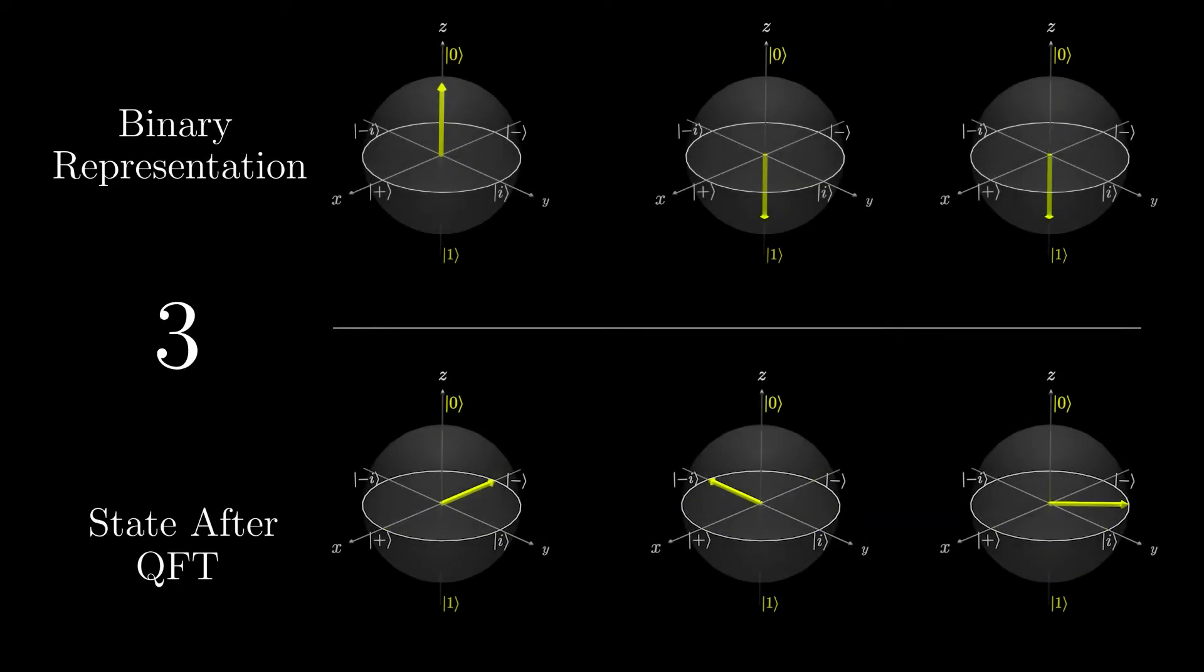On the top, we have how we would normally represent a number in binary. As you can see, each of the qubits is either 0 or 1, and if we take those bits, we get the number. Then underneath, we have the same qubits after the quantum Fourier transform has been applied. Instead of encoding the numbers like we normally do in a classical computer with 0s and 1s, the numbers are now encoded by the phase of the qubits that are in a uniform superposition.